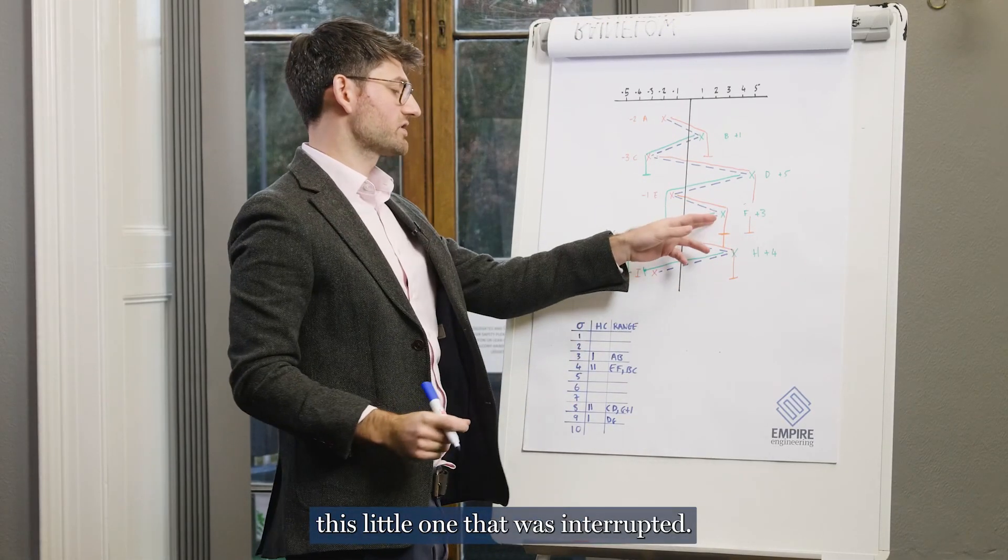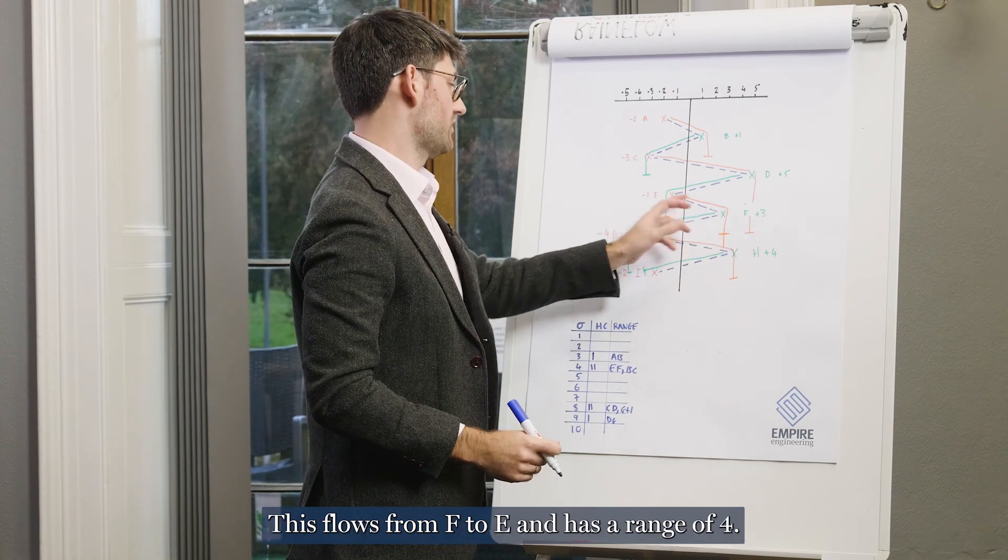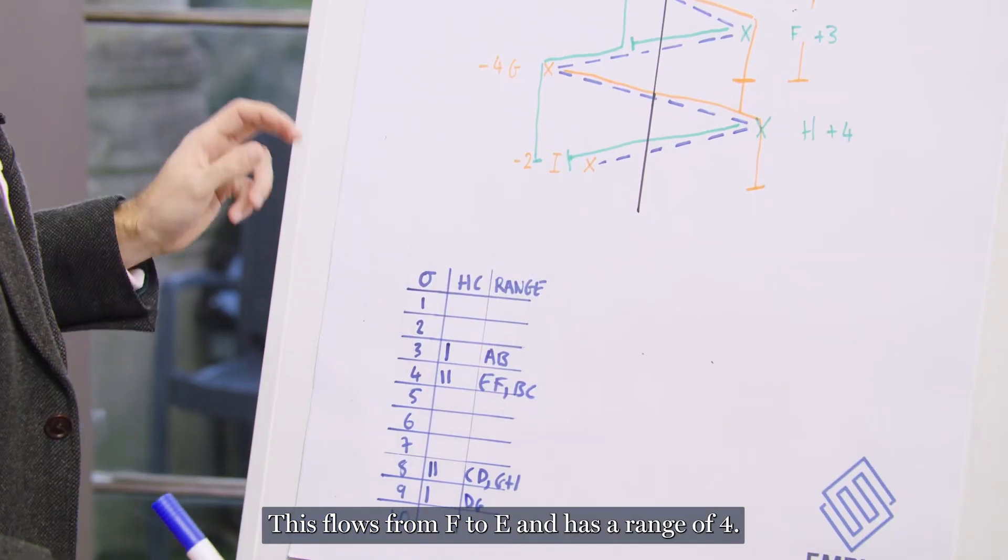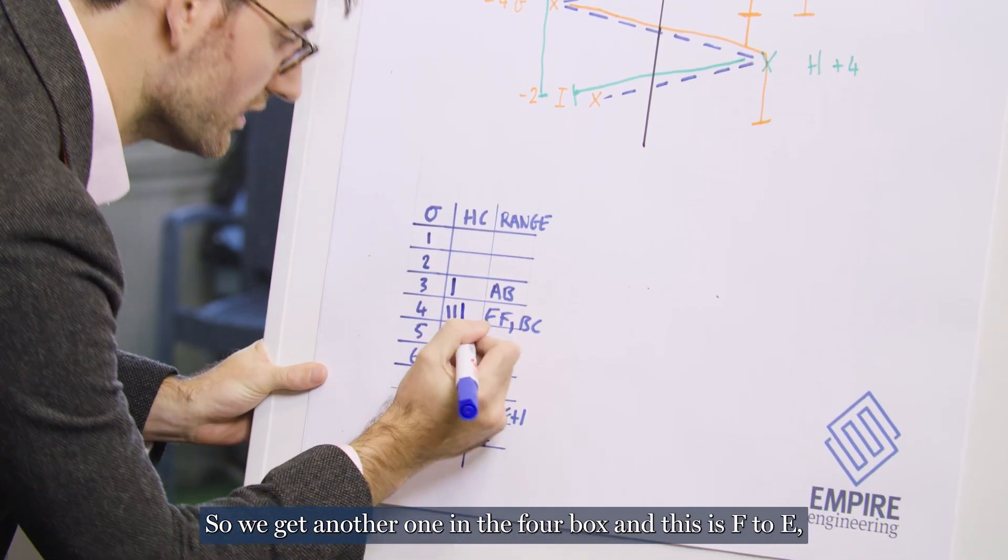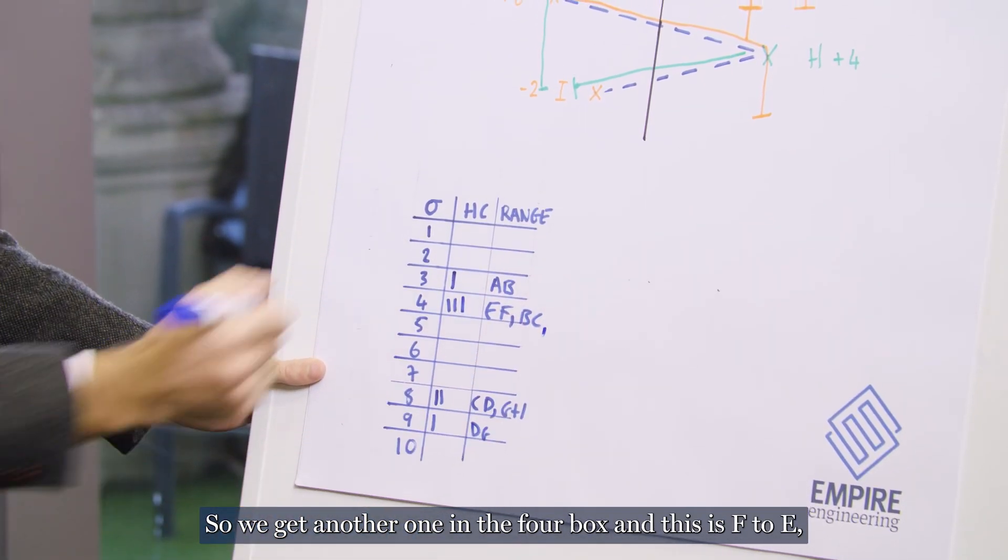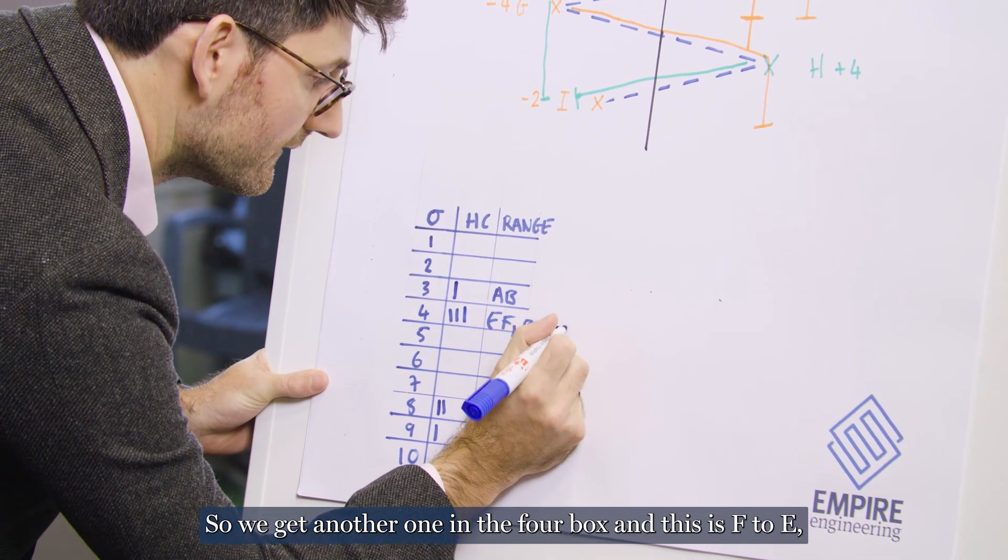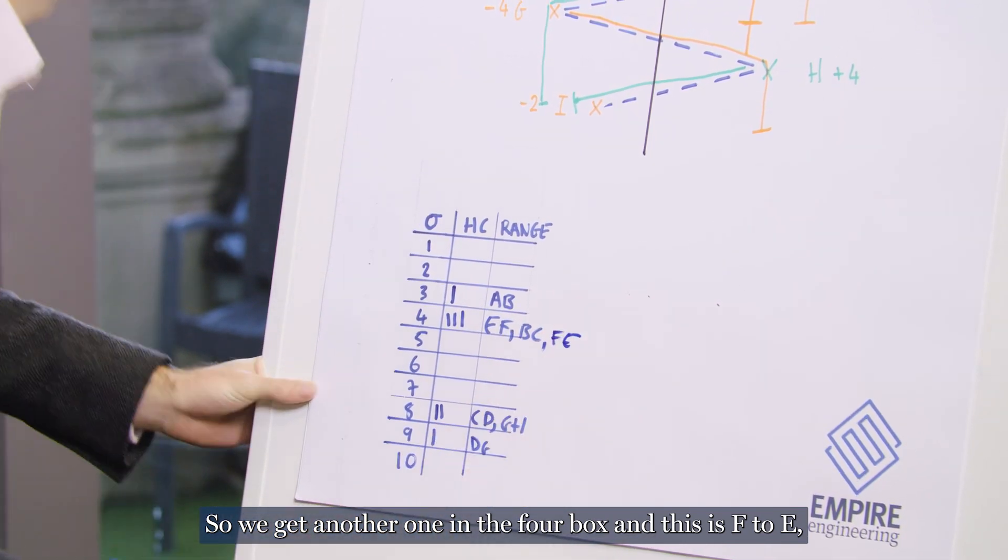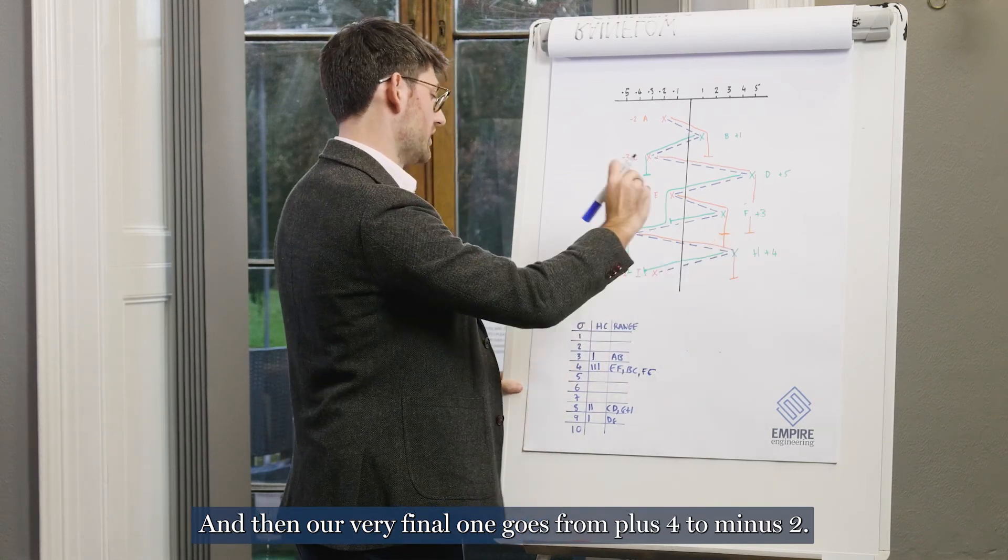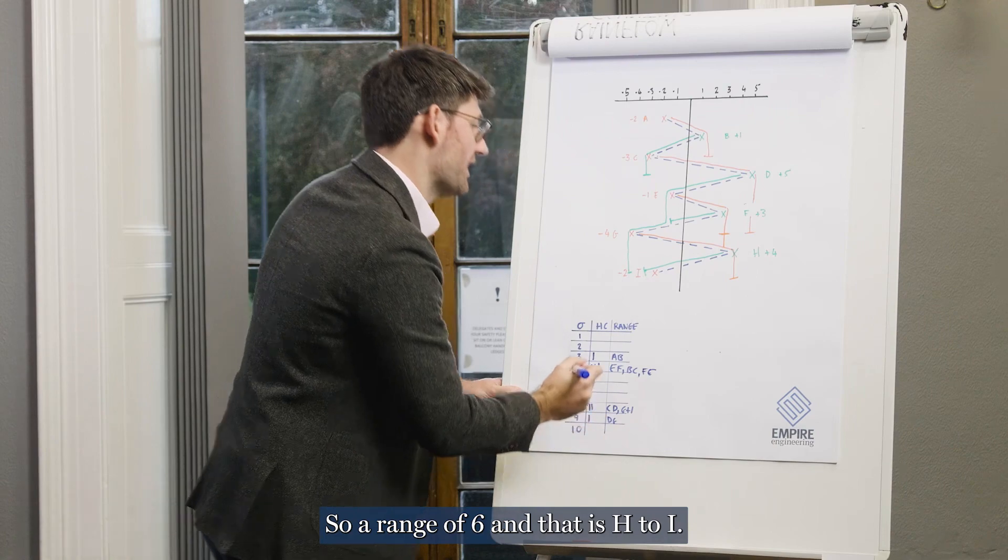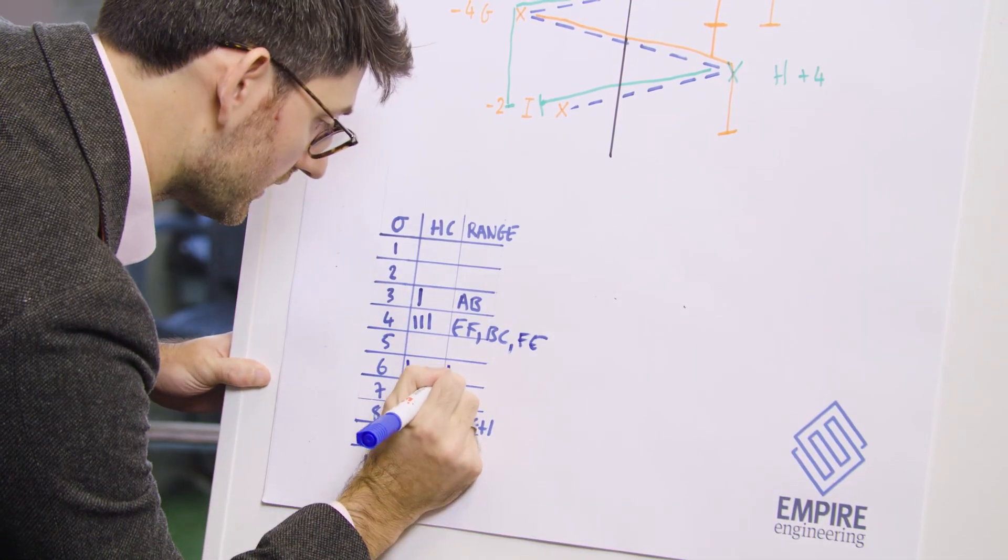Now we have this one, this little one that was interrupted. This flows from F to E and has a range of four. So we get another one in the four box and this is F to E. And then our very final one goes from plus four to minus two. So a range of six and that is H to I.